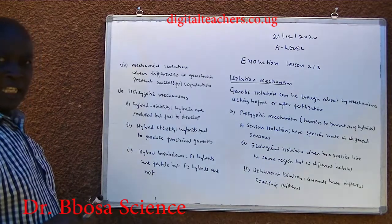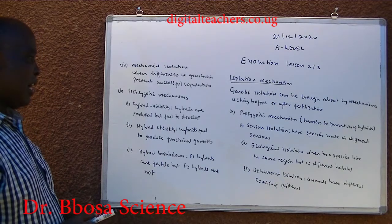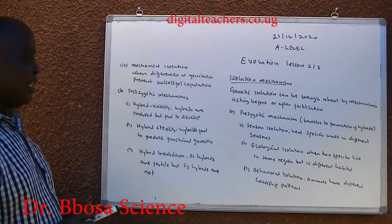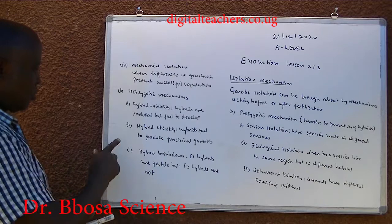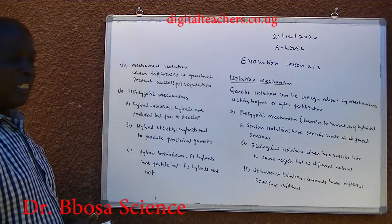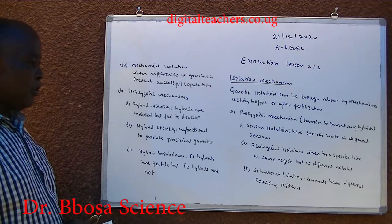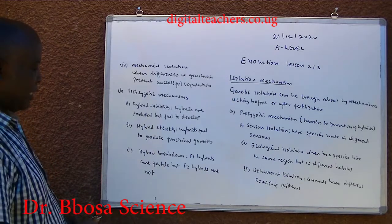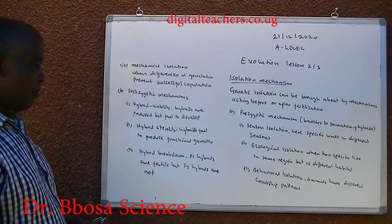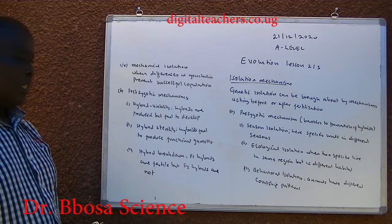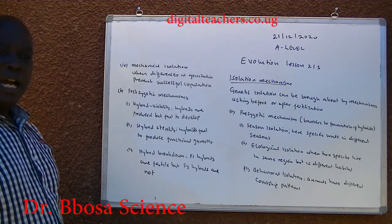B. Postzygotic mechanisms: (1) hybrid inviability — hybrids are produced but fail to develop; (2) hybrid sterility — hybrids fail to produce functional gametes; (3) hybrid breakdown — F1 hybrids are fertile but F2 hybrids are not.